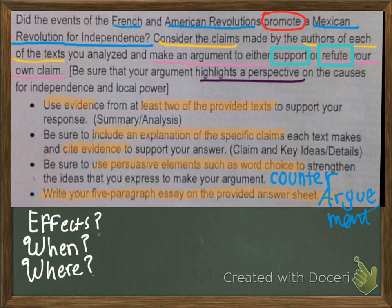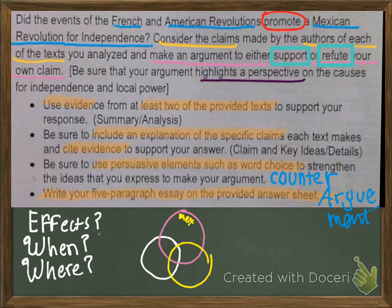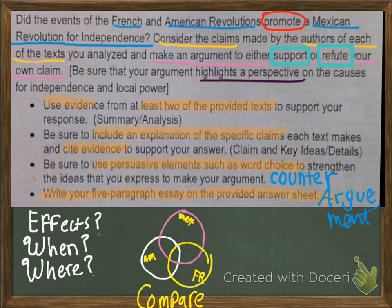In addition to knowing when, I need to know where these events occurred. Where is France, America, and Mexico? If they're close to each other, that increases the probability of a direct effect. If they're not near each other, I may need to look for indirect effects. One way or another, I'll have to make some comparison between these revolutions — understanding their effects, timing, and location will allow me to compare and contrast them and decide whether the Mexican revolution for independence was promoted by the American and French revolutions.